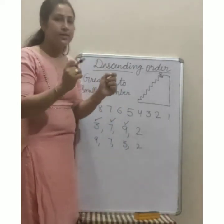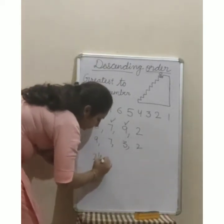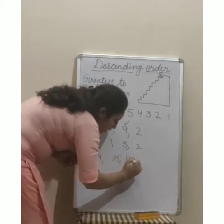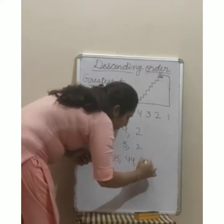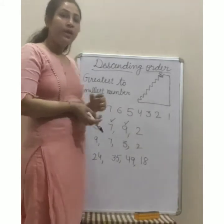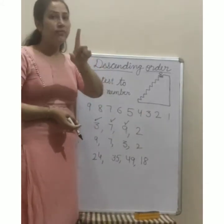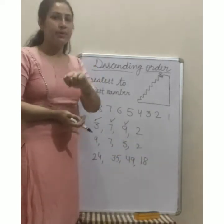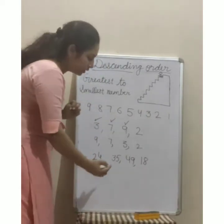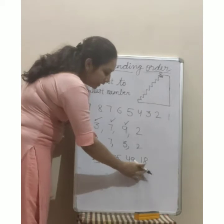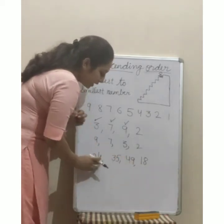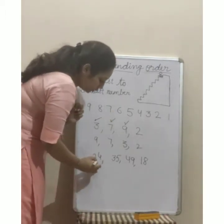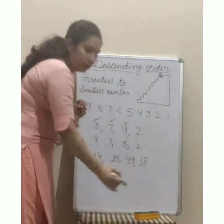Let's take another example। Okay? 24, 35, 49, and 18. Okay? पहले वाले example में only one digit था। अब इसमें कितने digits हैं? 2 digits हैं every number में। ठीक है? First number 24, next 35, 49, and 18। आपने क्या observe करना है? Firstly, number का first digit देखो। वो हैं 2, 3, 4, और 1।